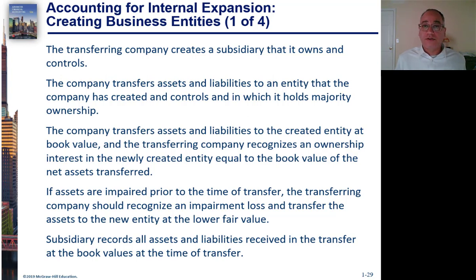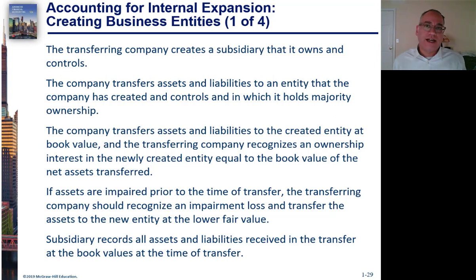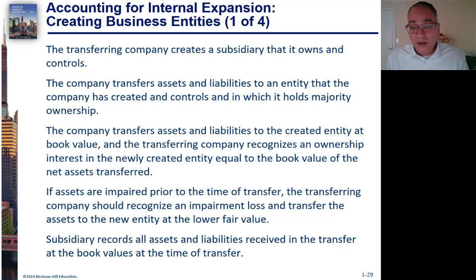There is one exception to this: transferring an asset to a subsidiary triggers impairment tests. If you're transferring because the value of an asset has dropped, you need to test that asset for impairment. If there's an impairment loss, record it and record the asset at its new fair value. Otherwise, everything transfers at book value.